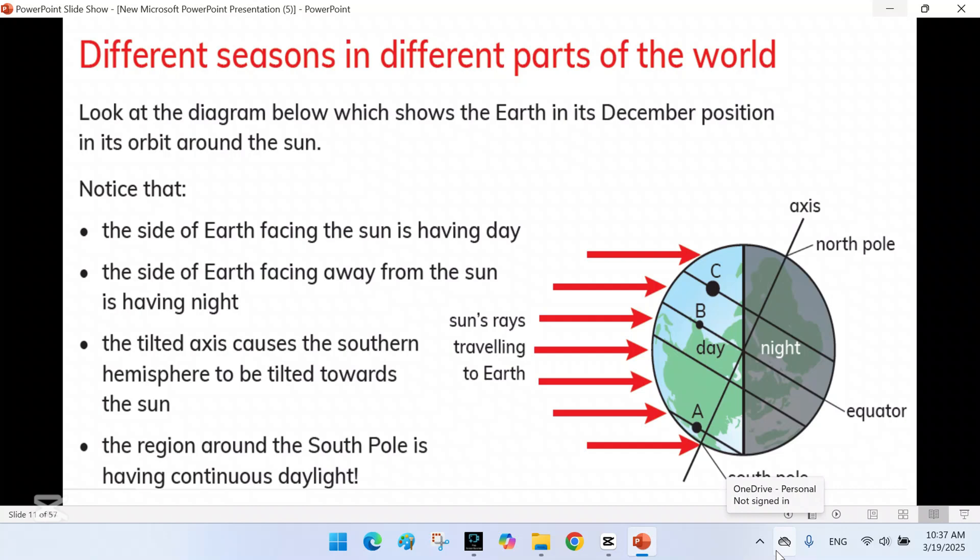Regions closer to the equator have little seasonal change, and areas further from the equator experience more extreme variations in temperature and daylight. Understanding these concepts helps us appreciate how our planet works and how it influences the climate and environment around us. I hope this video helped you understand the relationship between Earth's movement, its orbit, and the seasons.